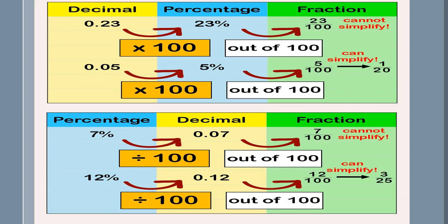This is another example in which we are changing decimal to percentage and to fraction. When we have a number such as 23%, we can say that if we divided 23 by 100, it will give us a fraction. 23 over 100. It will also give us a decimal, or 0.23.